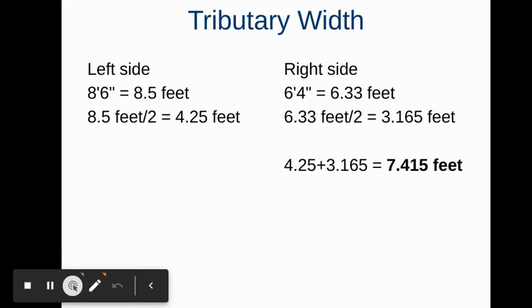For the tributary width, we need half of the left side and half of the right side. First, convert to decimal feet: 8'6" equals 8.5 feet divided by 2, giving 4.25 feet on the left side. On the right side, 6'4" equals 6.33 feet divided by 2, giving 3.165 feet. We add half the left side and half the right side together to get a tributary width of 7.415 feet.